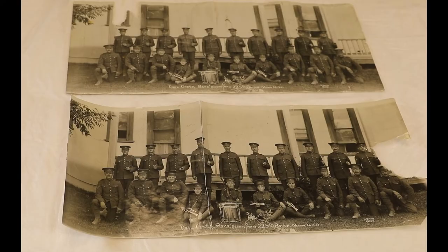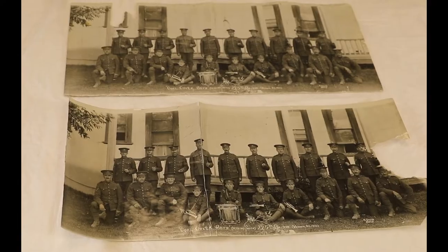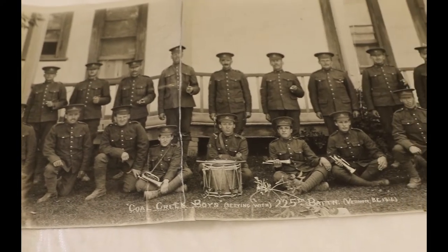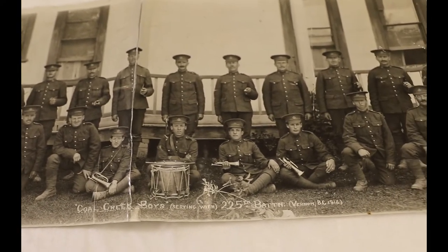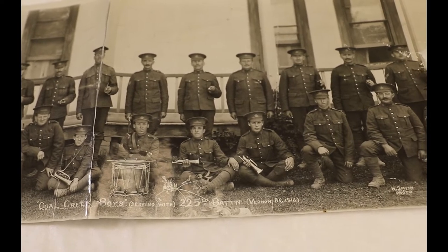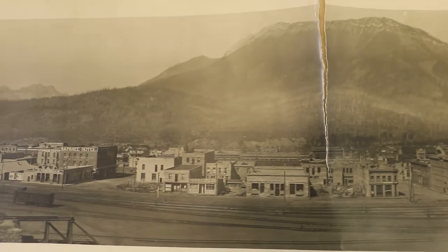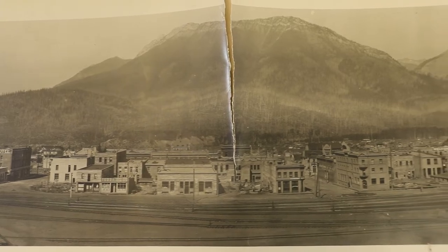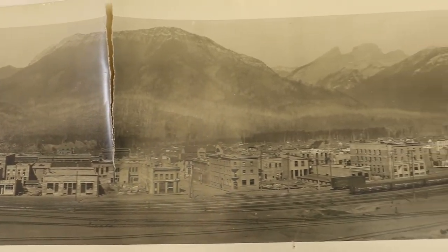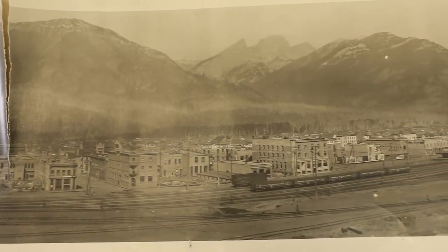Two are identical prints of the same photograph. These are a group portrait of Coal Creek World War One volunteers in uniform mustering at Vernon in 1916. The other is a panoramic view of Fernie taken with a fisheye lens facing west, taken in 1911.